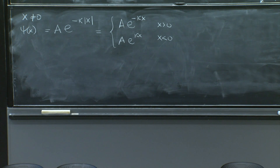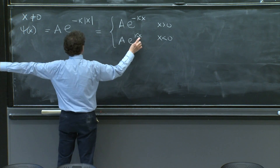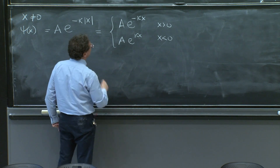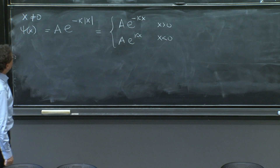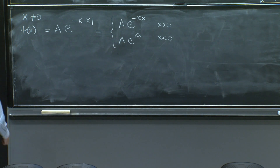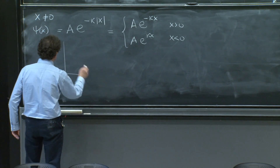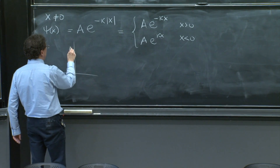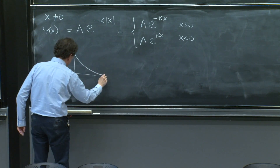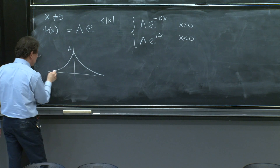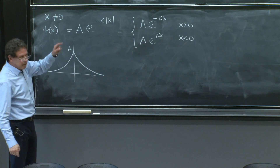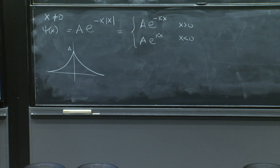The first exponential, negative, is the standard decaying exponential to the right. The one with positive exponent — here x is negative as you go all the way to the left, so this one decays as well. This thing plotted is a decaying exponential with amplitude A, and a decaying exponential with amplitude A on the other side, and a singularity there, which is what you would have expected.